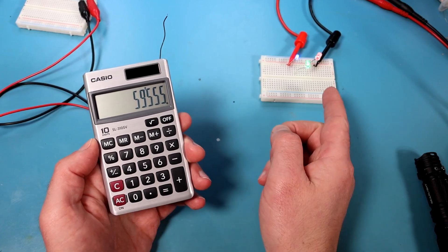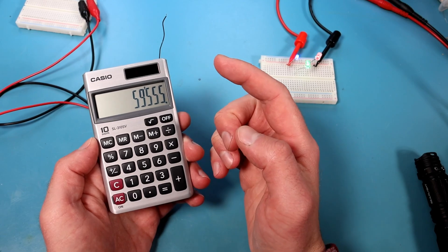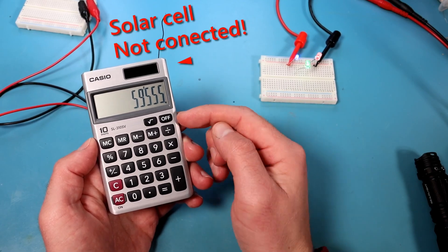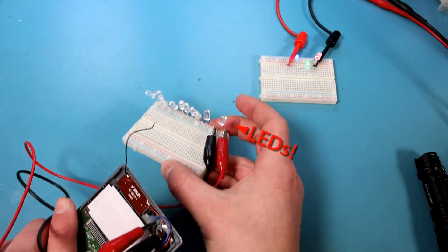But did you know that you can use LEDs, like solar cells, to make electricity rather than consume it? In fact, this calculator is actually running off of LEDs right now.